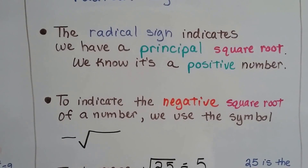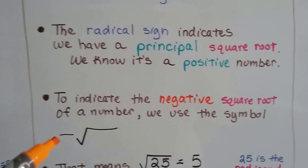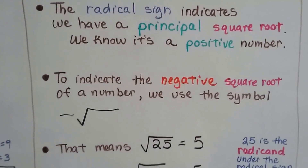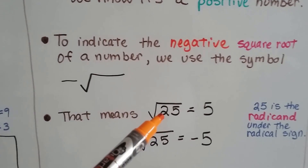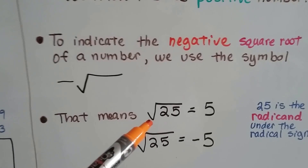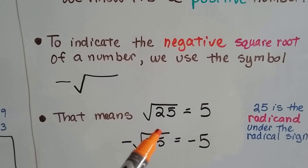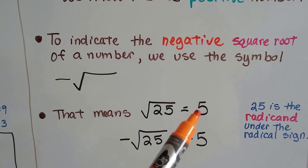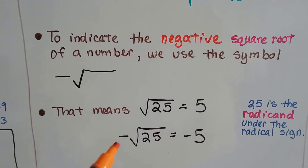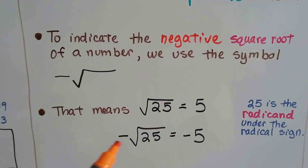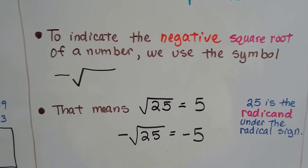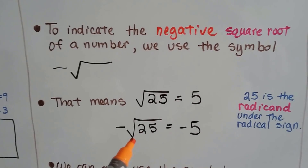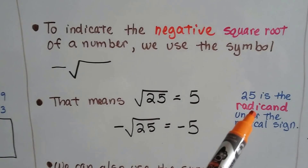To indicate the negative square root, you're going to see a minus sign in front of the radical sign. So when we have 25 underneath this radical sign, that means we need to find the square root of 25, which is a positive 5. And when we see the minus sign in front of it, the negative square root of 25 is a negative 5. We call the number underneath the radical sign the radicand.